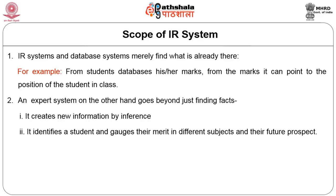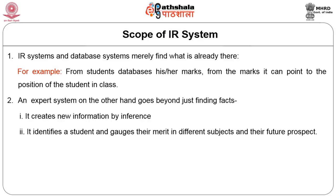In an expert system, on the other hand, it can go beyond just stating what is a fact. It can state something new by making inferences depending upon what kind of inferencing rule or engine is used. It can identify a student and also give a statement on merit. For example, an inferencing rule can state: all students who scored 70 marks and above are A plus, all students who scored 50 and above are A, and so on. Once this is encoded as an inference rule, the system can provide the student name, their marks, and their grade by making this inference.